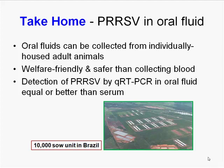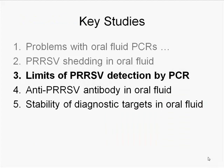The take-home from this individual boar study: you can collect oral fluids from individually housed animals; they need some training, but after giving them familiarity with a rope for two 20-minute sessions, most animals will happily interact with a hanging rope. This is a welfare-friendly approach to disease monitoring and much safer than collecting blood. Detection of PRRS by PCR in oral fluids is equal to or better than serum.